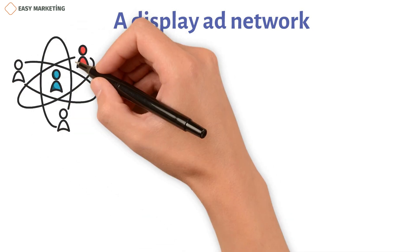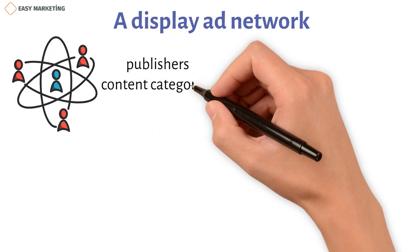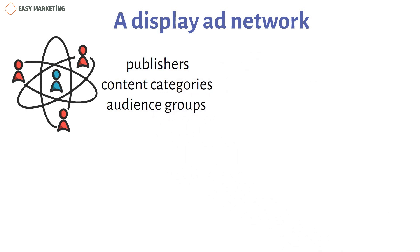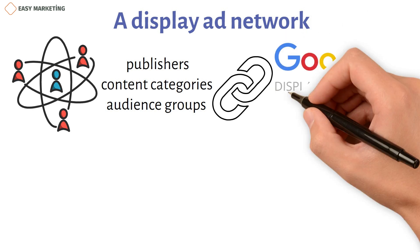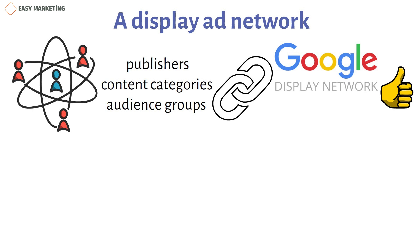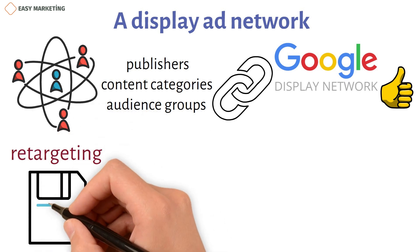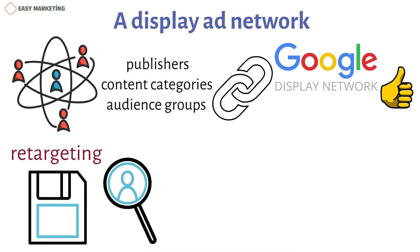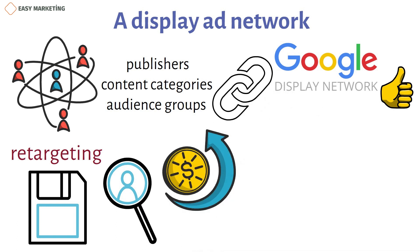A display ad network is a platform or service that lets you decide how your ads are shared among publishers, content categories, audience groups, and other ways to interact with people. It acts as a link between the content of your ad and the platform the customer wants to use. There are a lot of display ad networks, but the Google Display Network might be the best. Based on your current customer profiles, you can build retargeting campaigns that find new audiences. It also has a smart automation feature that lets you make more money from your display advertising spend.